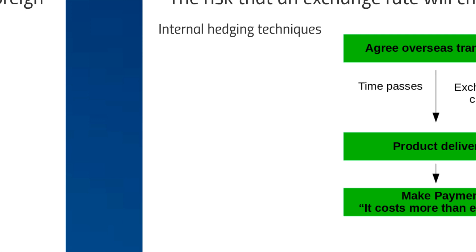Hello and welcome to this Estranti video. Today we'll be looking at the topic of internal hedging techniques. As you'll know if you're studying for BA1 or F3, transaction risk occurs if you agree to buy a product in a foreign currency, but the exchange rate changes unfavorably before the product is delivered and you end up having to pay more than you expected. Internal hedging is one way of reducing this risk.